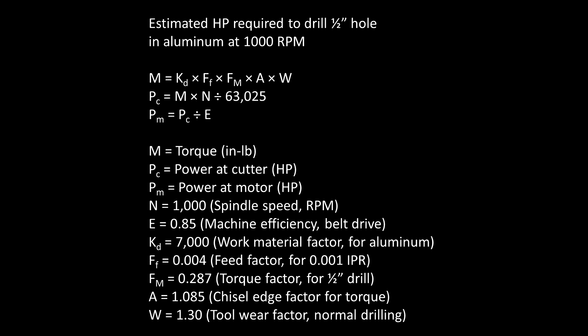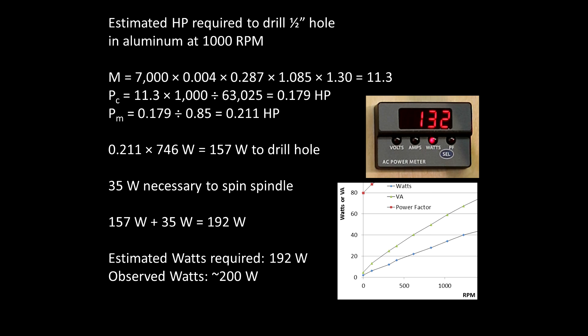Needless to say, the SI units for power are a lot cleaner. Inserting the constants into the equations, we arrive at 11.3 inch-pounds of torque required. This is 0.179 horsepower at the cutter, and assuming an efficiency of 85%, 0.211 horsepower at the motor. Given a horsepower of 746 watts, 157 watts are necessary to drill a half-inch hole in aluminum at 1000 RPM.